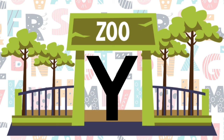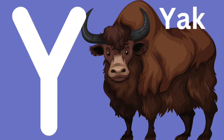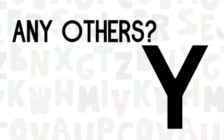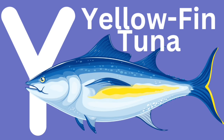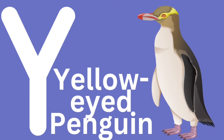Are there any animals at the zoo that start with the letter Y? The Y says Y. How about a yak? Y-y-yak. Can you think of any other animals that start with the letter Y? How about a yellowfin tuna? Y-y-yellow. Or a yellow-eyed penguin. Y-y-yellow.